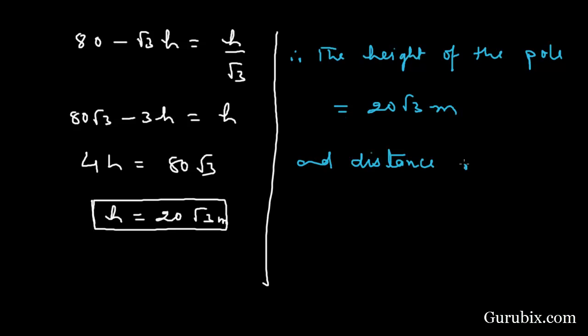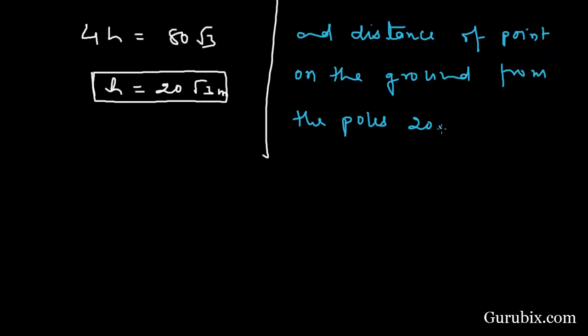And the distance of the point on the ground from the poles equals 20 square root of 3 over square root of 3 meters, which means 20 meters, and 60 meters. This is the solution of the question. Thank you.